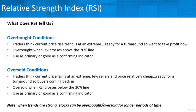Oversold conditions are the exact opposite. Traders think the current price has fallen to an extreme — it's gone way too far, there are few sellers, and the price is relatively cheap. People are not willing to sell anymore. So it might be ready for a turnaround back up. Buyers start coming back in, and as prices rise, even more buyers come in and really drive the price up. With RSI, a security is considered oversold when the RSI crosses below the 30% line. Above 70% is overbought; below 30% is oversold.